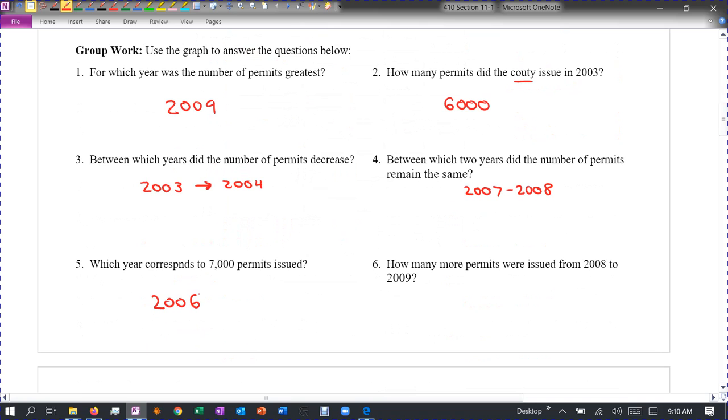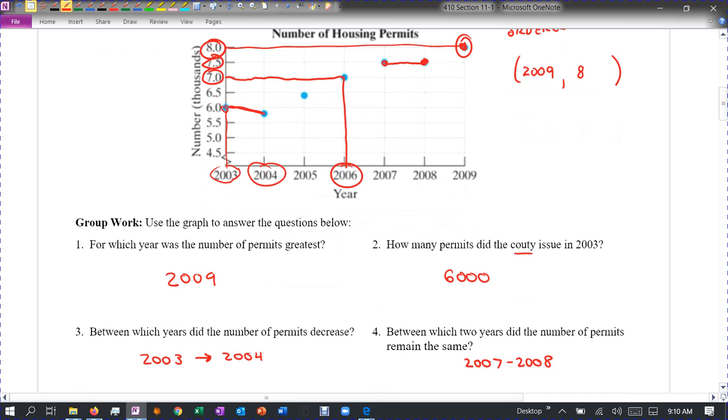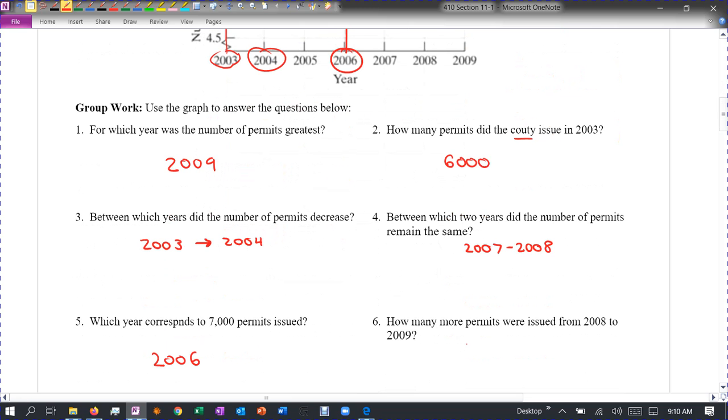And how many more permits were issued from 2008 to 2009? So from 2008, we had 7.5,000, so that's 7,500. In 2009, we had 8.0, which is 8,000. So that's the difference of 500 permits.